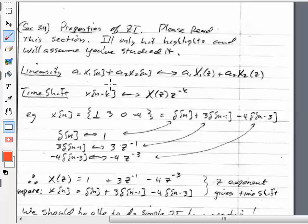All right, so what are they? Well, of course, linearity. If I have the sum of two or more different time functions and when it takes the Z-transform, I can just take the scaled Z-transforms and add them together. So that's a big one.